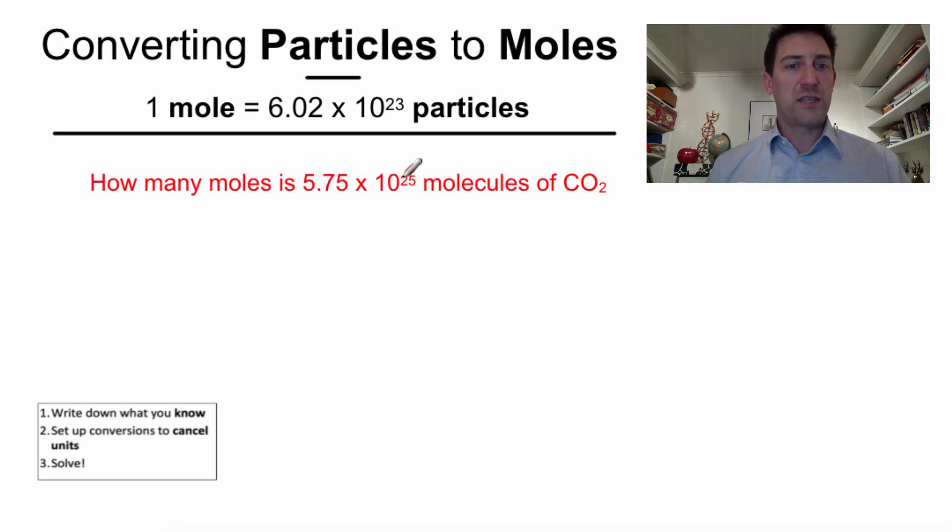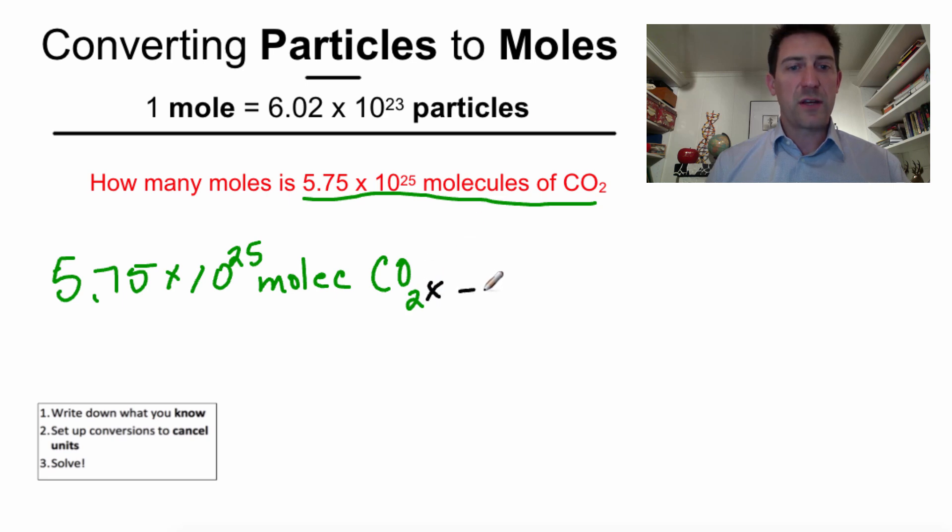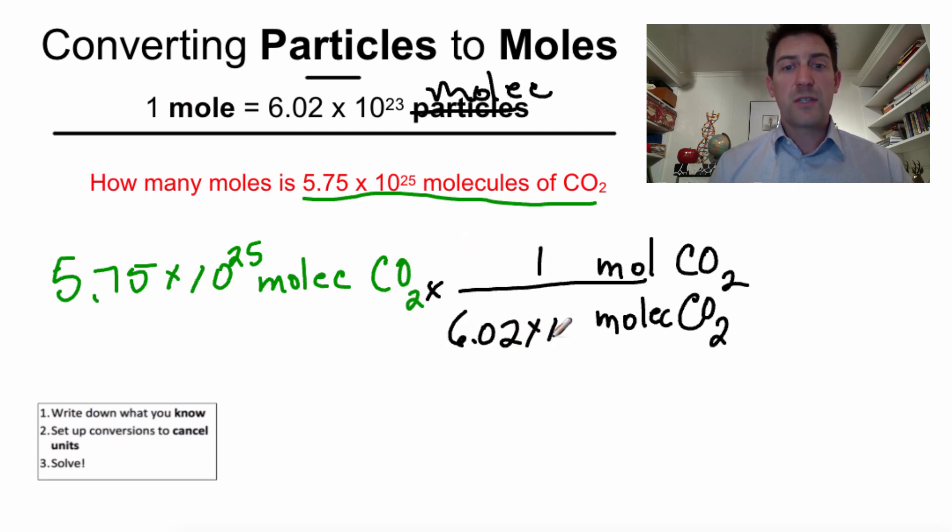How many moles is 5.75 times 10 to the 25 molecules of carbon dioxide? So, here's what's given. This is my known. 5.75 times 10 to the 25 molecules, I'm going to abbreviate that M-O-L-E-C, of CO2. Now, remember, I need some sort of conversion factor here. Even if you don't know what to do next, I know I don't want my answer in molecules of CO2. So, I have to have molecules of CO2 here so that those two will cancel out. Now, molecules can only be turned into one thing. We could change this from particles to molecules. We could change that to anything. So, that means we can change molecules into moles. So, I'm going to put moles of CO2 here.